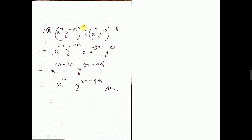This sum: this to the power 4 — give it to x and give it to y — so 4n here, minus 4m here. Then 3 to the power minus n, that is minus 3n. Y to the power minus 2 times minus n, that is plus 2n. Now same base: this x and this x, so 4n minus 3n; and y to the power minus 4m plus 2n, so 2n minus 4m. Since 4n minus 3n is n, that is the answer.